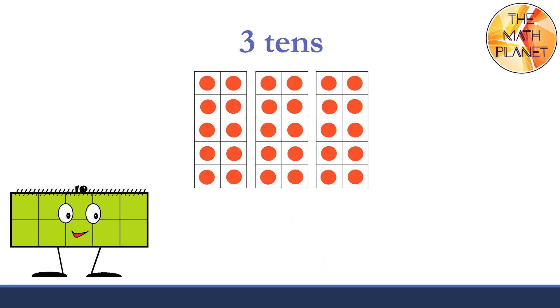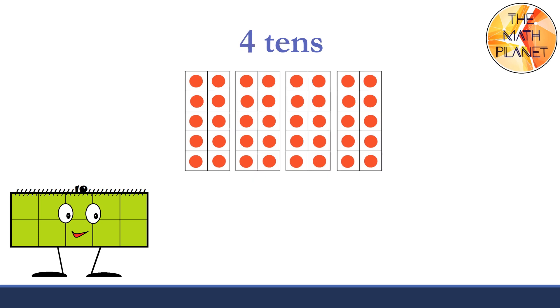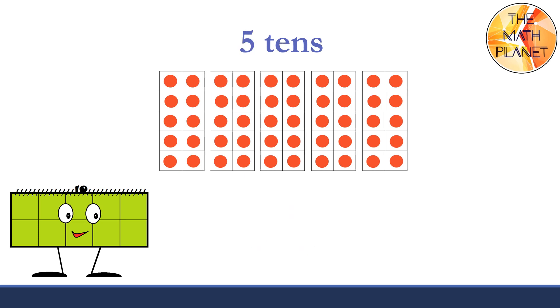Three tens make 30. T-H-I-R-T-Y, 30. Four tens make 40. F-O-R-T-Y, 40. Five tens make 50. F-I-F-T-Y, 50.